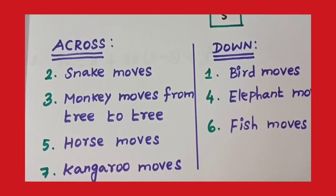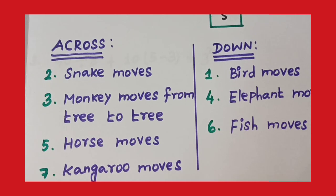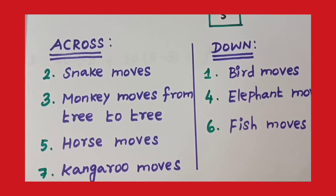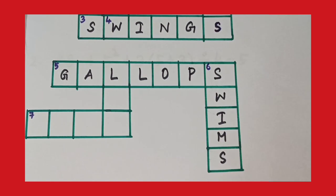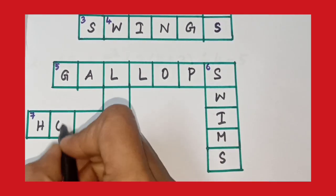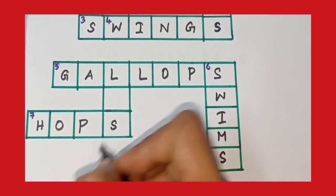And seventh one, kangaroo moves. The clue is across. Kangaroo moves, hops. H-O-P-S. Hops.